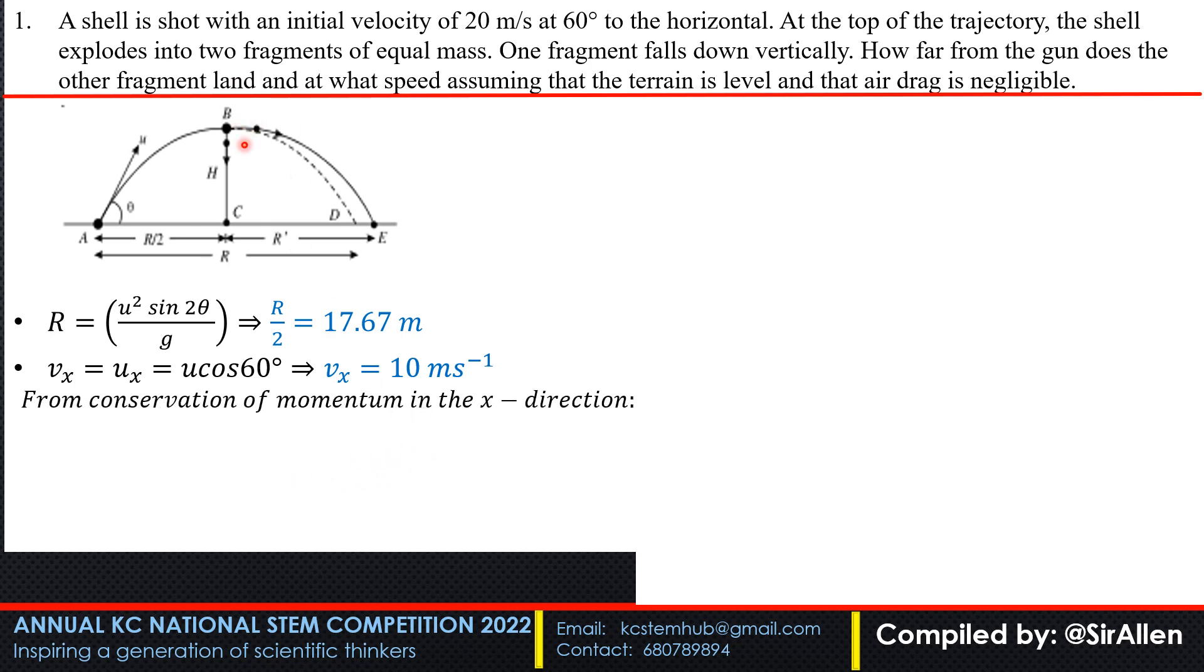From conservation of momentum at B in the x direction—momentum is a vector quantity, so it's important to specify direction. The initial momentum mv equals the sum of the momentum of its parts. So m1 u1, the fragment that fell vertically, has u1 equal to zero in the x direction because it's falling vertically. The only fragment with momentum in the x direction is u2.